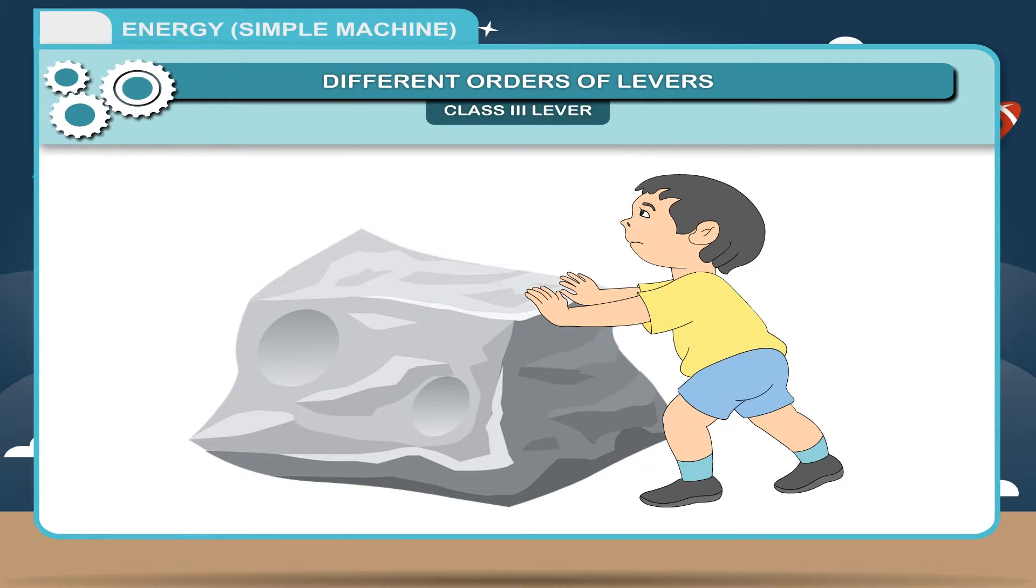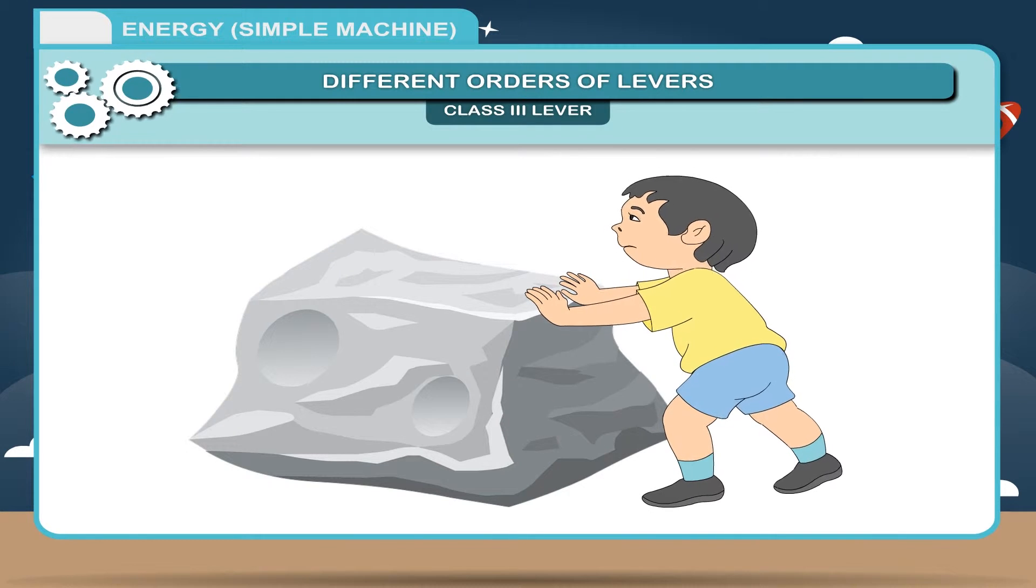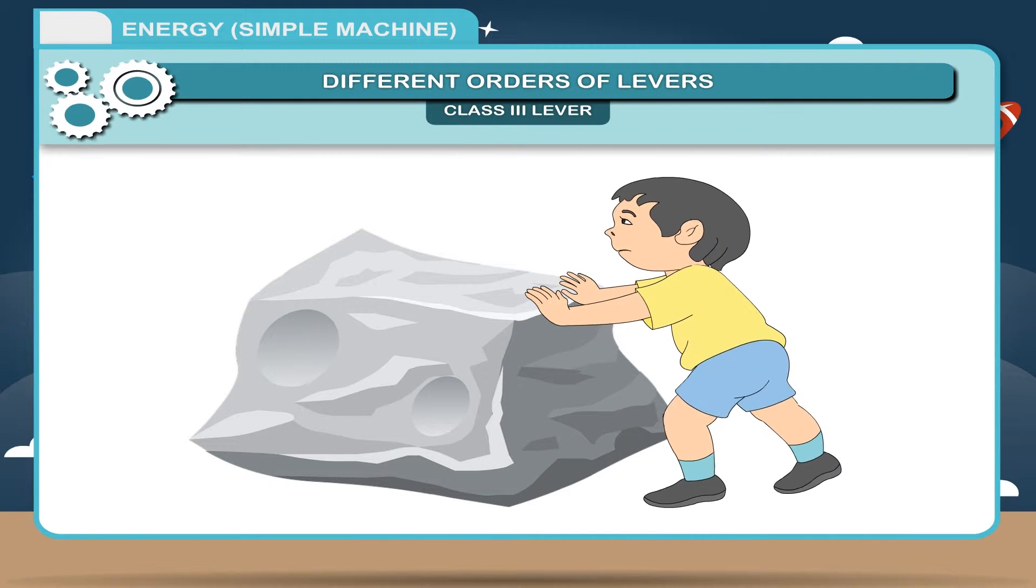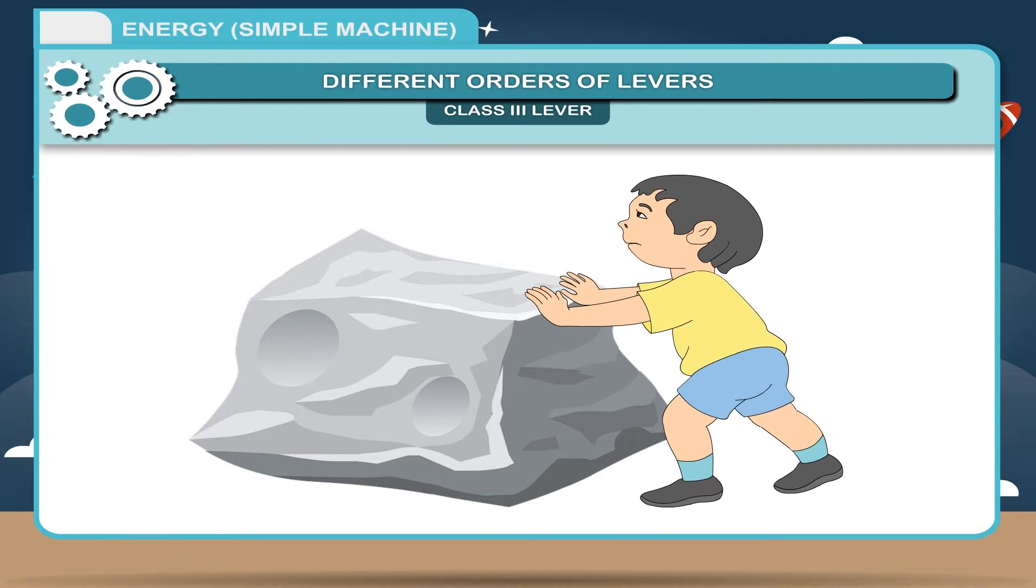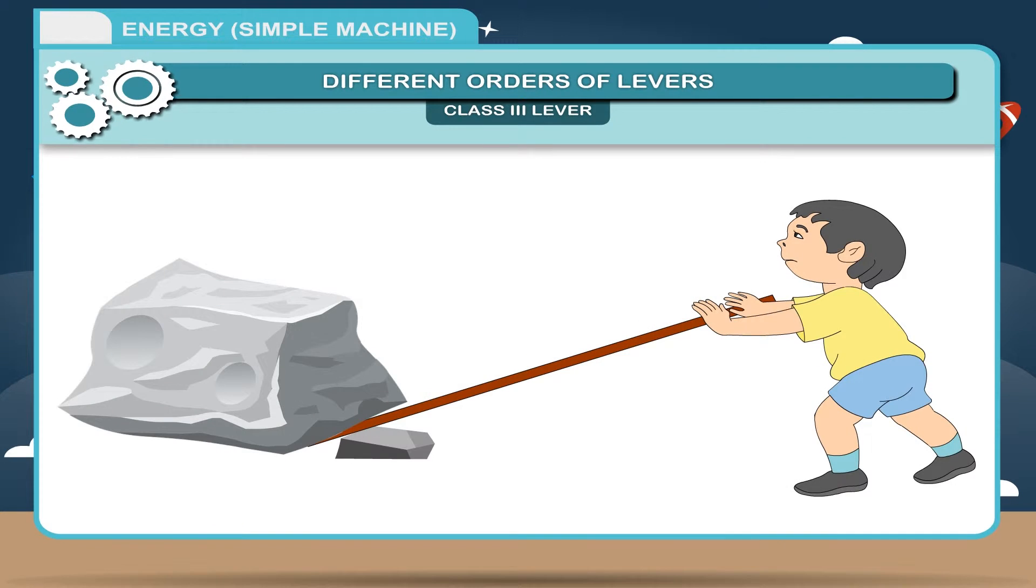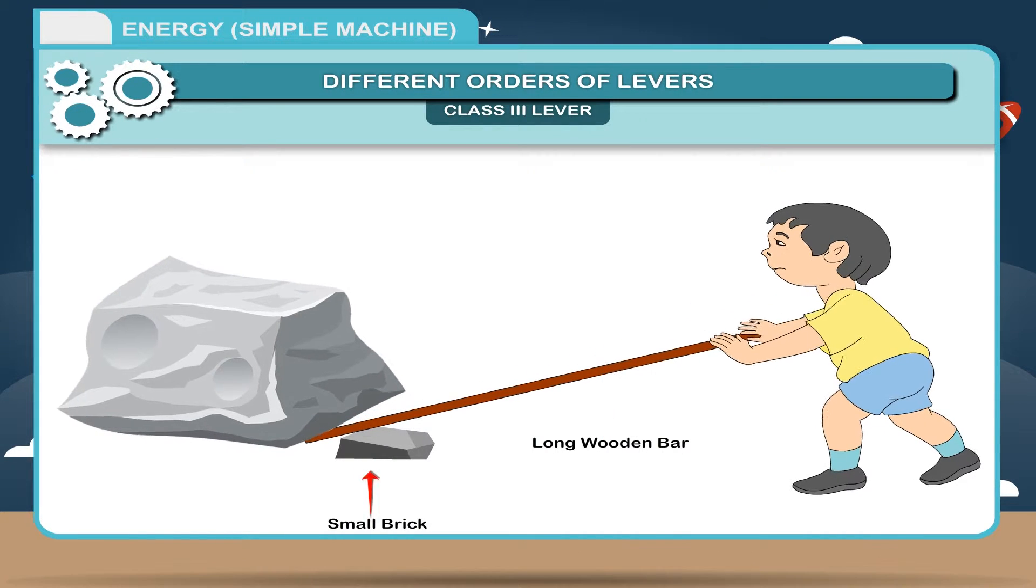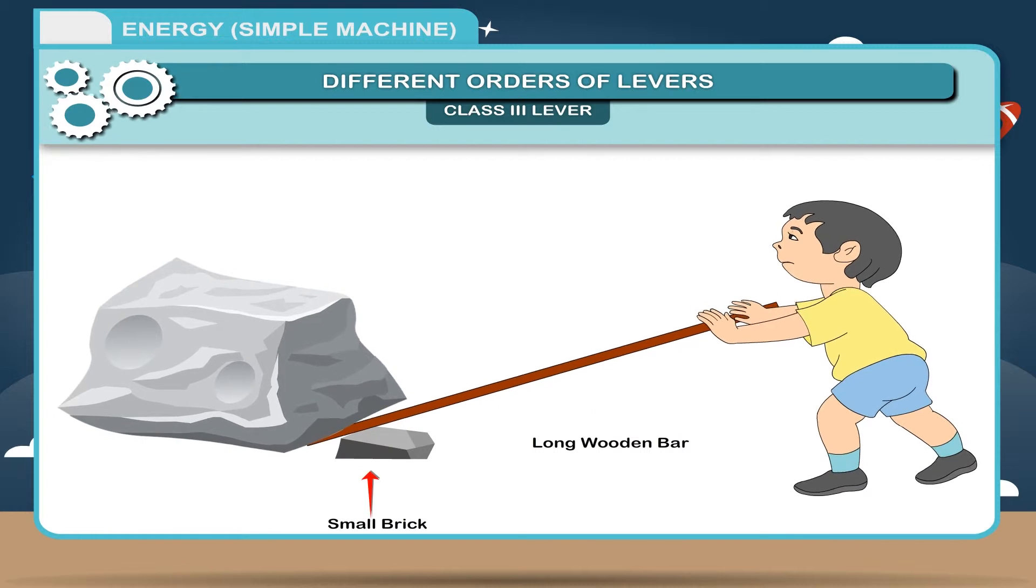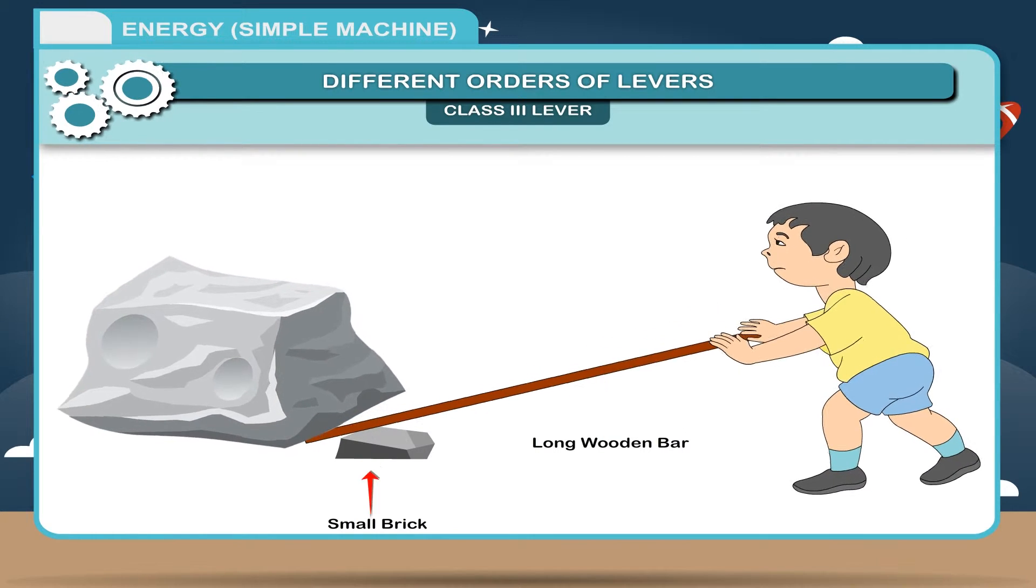Activity: Suppose you have to shift a heavy stone from its position. If you simply do it by pushing, that is by applying a force, you will observe that stone cannot be shifted easily. Take a long wooden bar and put a small brick in between the stone and yourself and apply a force as indicated in the figure. You will observe that stone can be easily shifted.